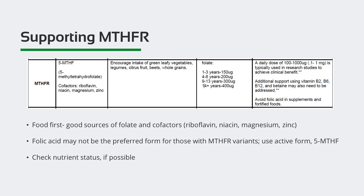How to support MTHFR? Address the need for folate. 5-methyltetrahydrofolate is also the predominant form found naturally in food. As always, consider food intake first. Good sources of folate would be green leafy vegetables, legumes, citrus fruits, beets, and whole grains. So if not consuming a good variety of those consistently, that certainly needs to be improved upon. Currently, folic acid is the form used to fortify foods due to its stability and resistance to oxidation, and it's often included in supplements as well. But folic acid may not be the preferred form for those with MTHFR variants.